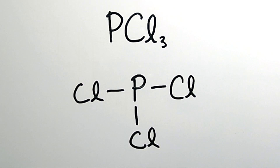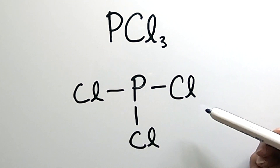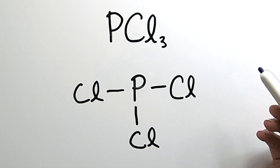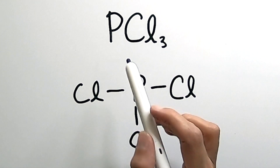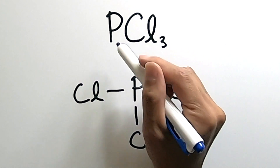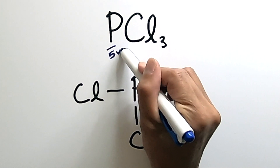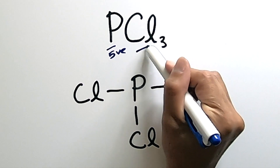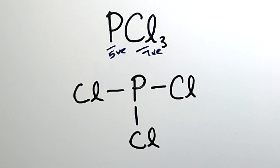The other way of drawing a Lewis dot structure is starting with the structure itself, if you're familiar with it — or maybe you looked it up online and saw something similar. We have phosphorus trichloride again, and remember, phosphorus has five valence electrons and each chlorine atom has seven valence electrons.